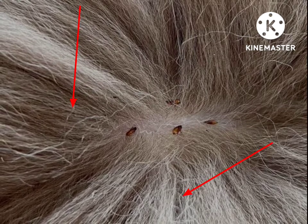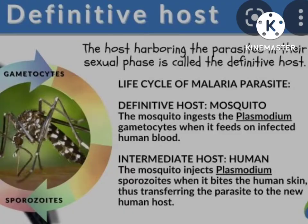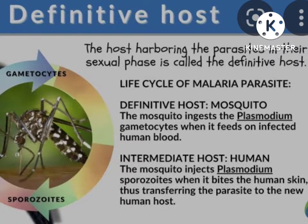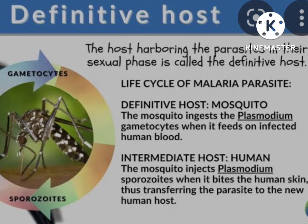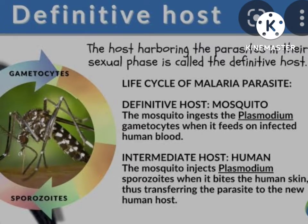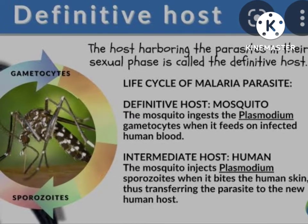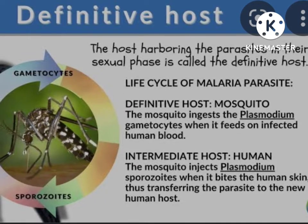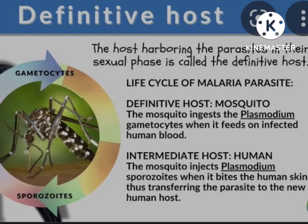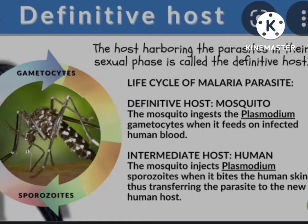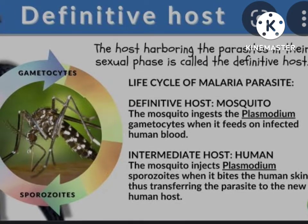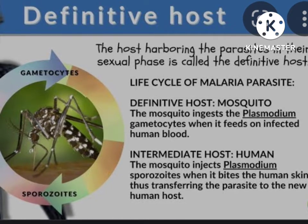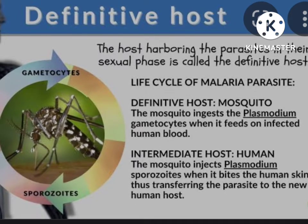There are three types of hosts: definitive host, intermediate host, and reservoir host. The definitive host is the host that harbors the adult stage of the parasite, or where the parasite replicates sexually. That means the parasite undergoes sexual replication in the definitive host.